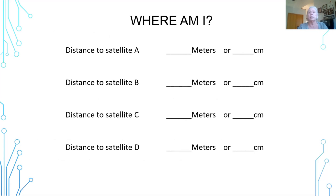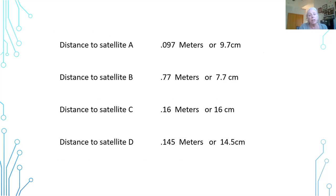You would give the students a sheet that looks something like this: what was their distance to satellite A in meters, and what would it be converted to centimeters? That's why this mathematics exercise is one of the reasons I would stick to middle school and high school, unless you want to give them the answers. If you want to do this with younger students and not deal with all of the mathematics, you can just give them the distances to satellites A, B, C, and D.